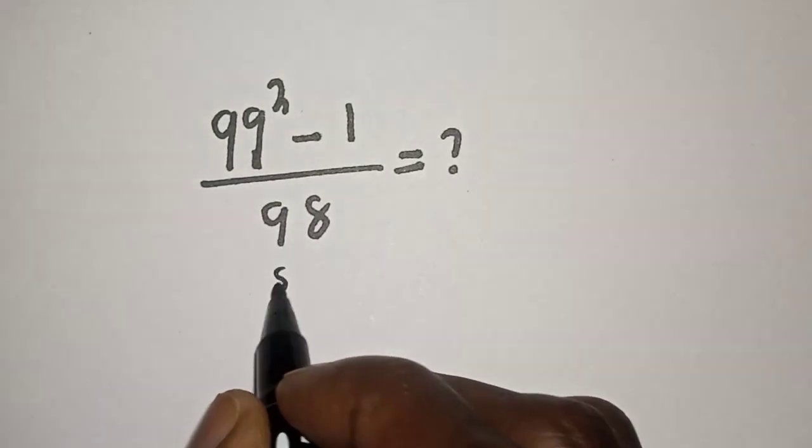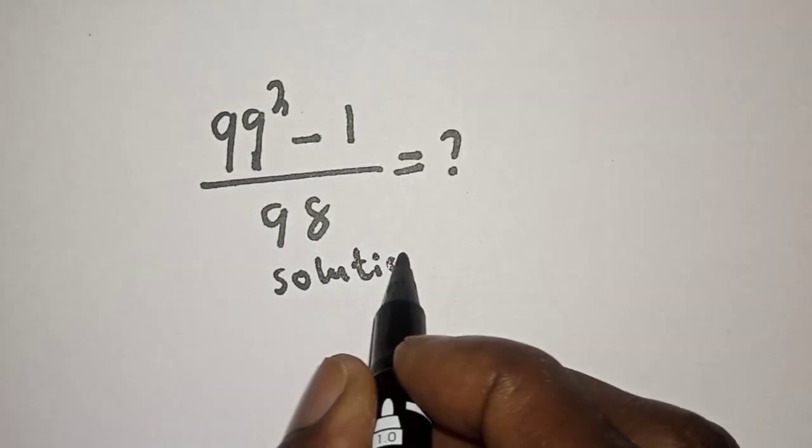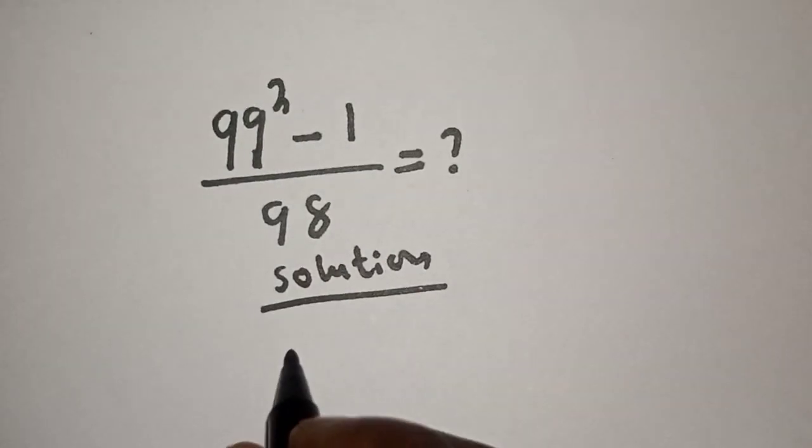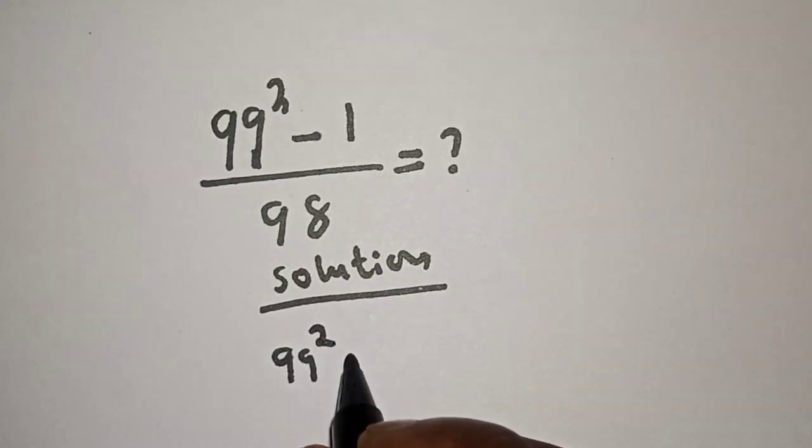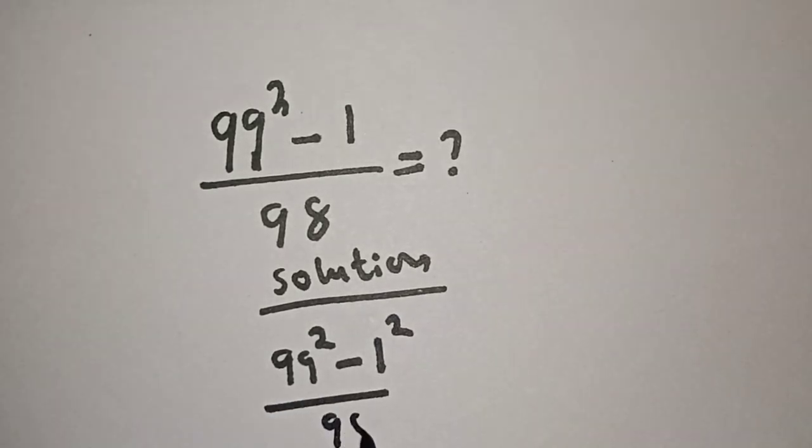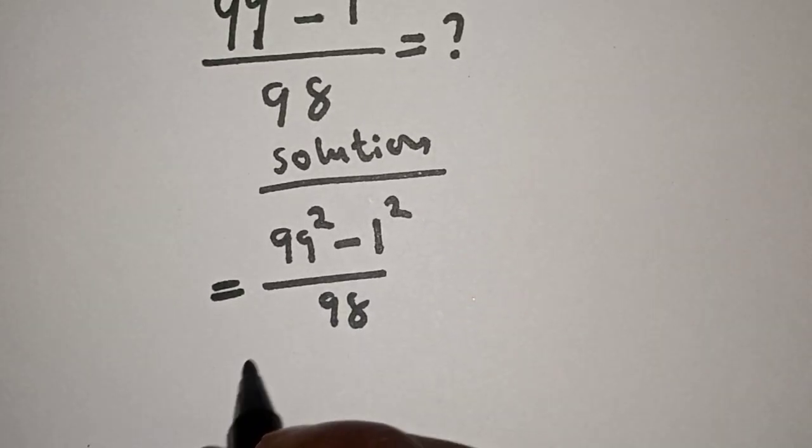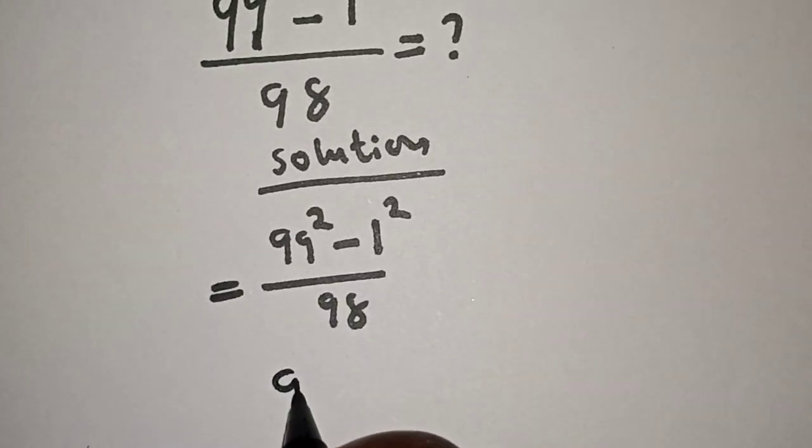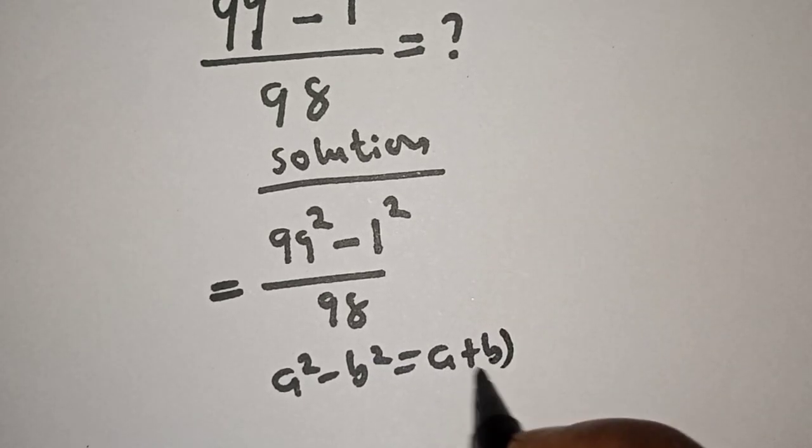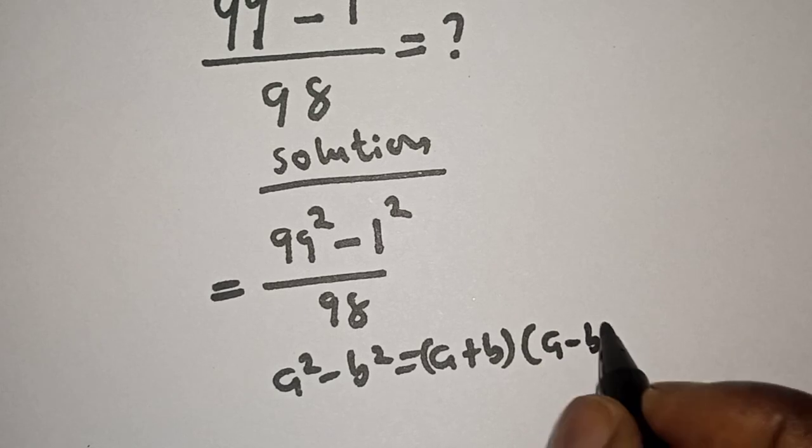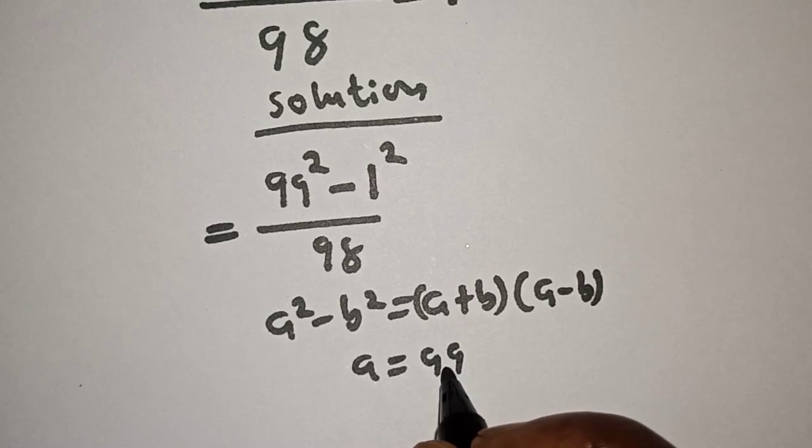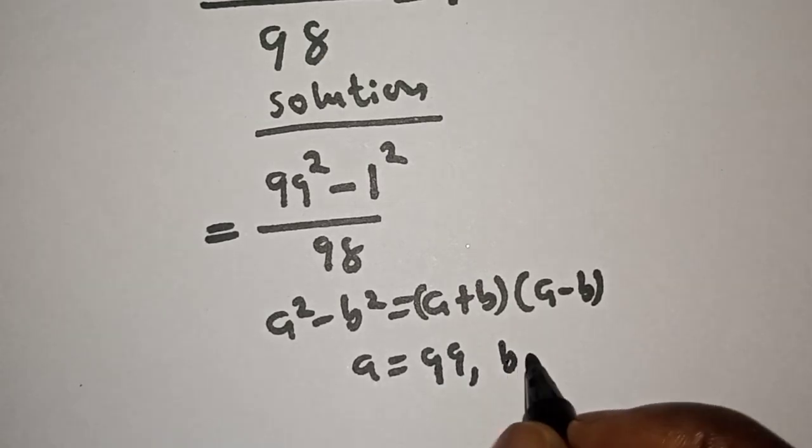And subscribe. Solution: 99 squared minus 1 is the same as 99 squared minus 1 squared, over 98. Take note of this truth: a² - b² equals (a + b) multiplied by (a - b), where a equals 99 and b equals 1.